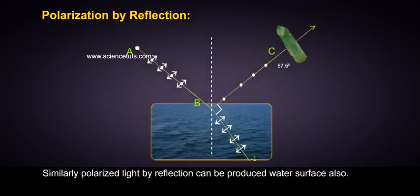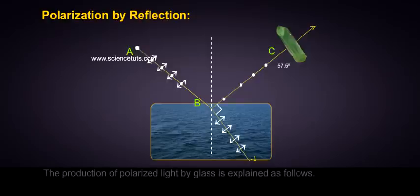Similarly, polarized light by reflection can be produced from water surface also. The production of polarized light by glass is explained as follows.